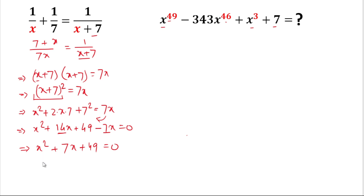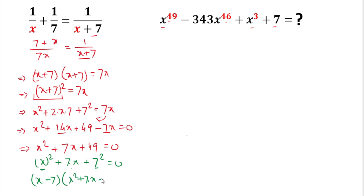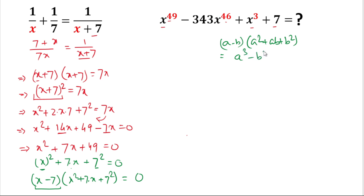We rewrite it as x² + 7·x + 7² = 0, which is in the form a² + ab + b². Now we multiply both sides by (x − 7). Since (x − 7)(x² + 7x + 49) is the formula for a³ − b³, the right-hand side remains 0.